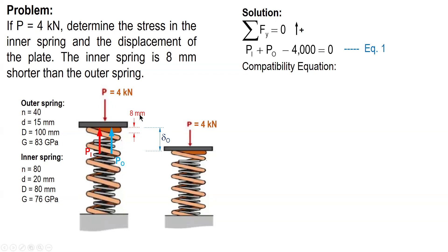And since the inner spring is 8 mm shorter, this is the initial position of the inner spring. But when compressed, after applying the load, the inner spring touches here at the plate. So, this will be the deformation of the inner spring. So, from here, the compatibility equation involving delta is equal to delta outer is equal to delta inner plus 8, or delta outer minus 8 equals delta inner.